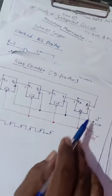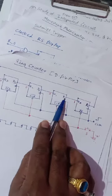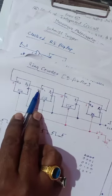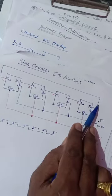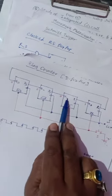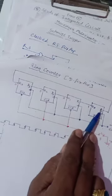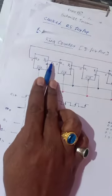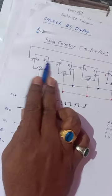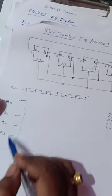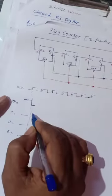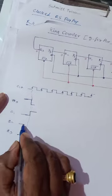At the arrival of the first clock, Q0 is 1, Q1, Q2, Q3 are 0. This 1 is connected to D1, and zeros are connected to D2, D3, and D0 via Q3. The D flip-flop works so that when D is 1, Q becomes 1, and when D is 0, Q becomes 0. So at the first clock, the 1 is shifted to Q1 and Q0 becomes 0.